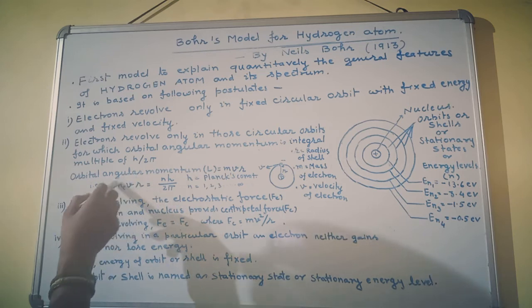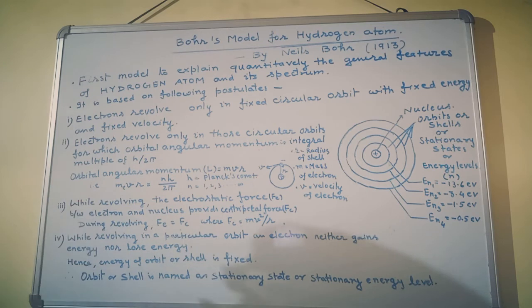The product of mass, velocity, and radius will be equal to nh by 2π.